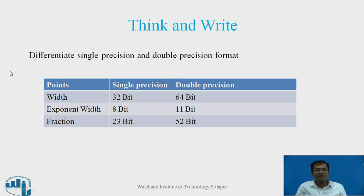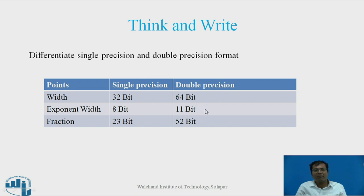I hope you have answered this question. Let us see the difference. In single precision format, the width is 32 bits; in double precision format, the width is 64 bits. Single precision has an 8-bit exponent width, while double precision has an 11-bit exponent width. For the fraction, single precision has 23 bits and double precision has 52 bits.